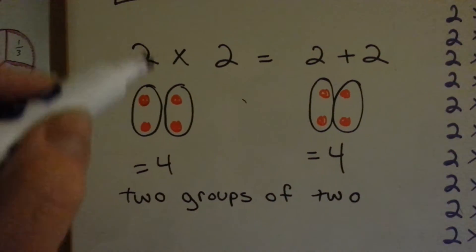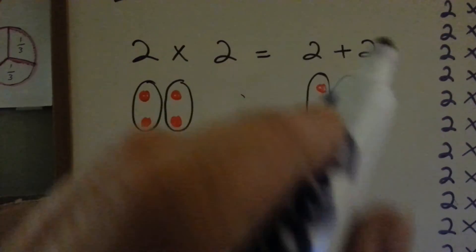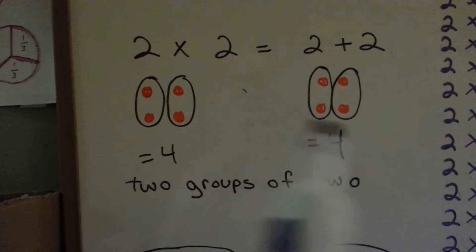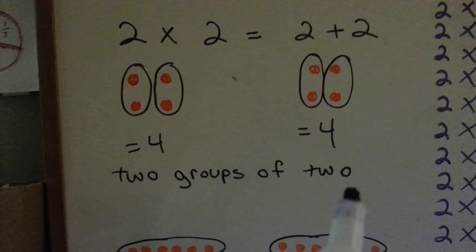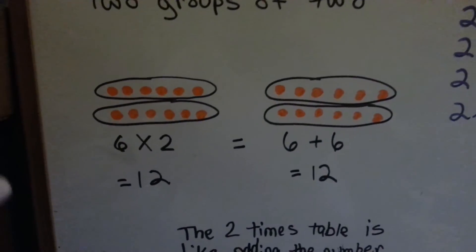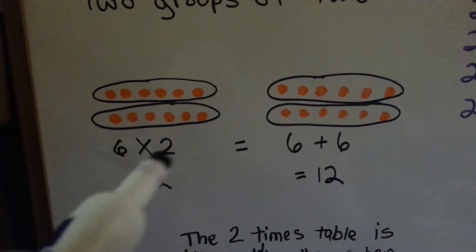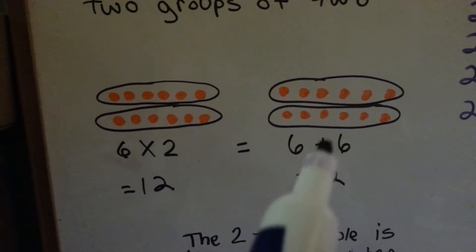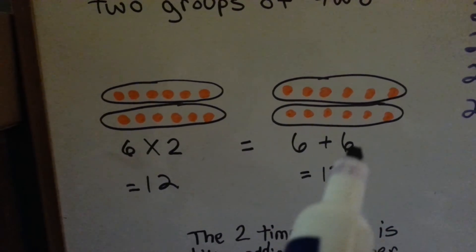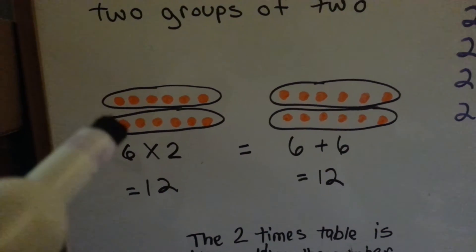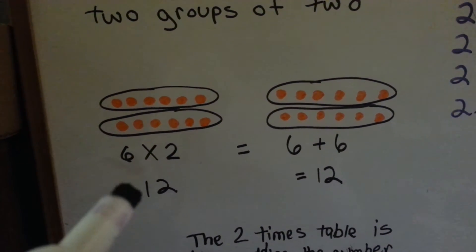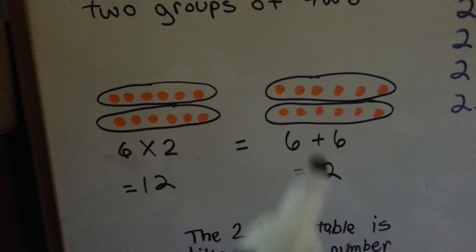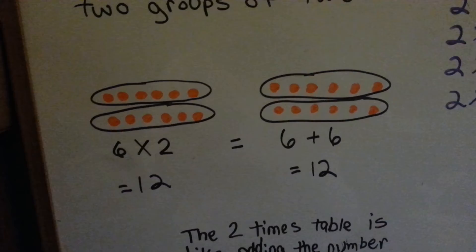So 2 times 2 is equal to 2 plus 2 — they both equal 4. It means two groups of 2: 1, 2, 3, 4. And in this one, 6 times 2 is the same thing as 6 plus 6. 6 two times — 1 time, 2 times — is 12. 6 plus 6 is 12.